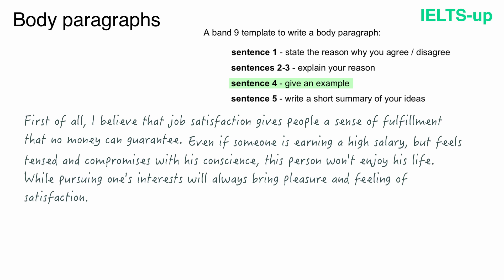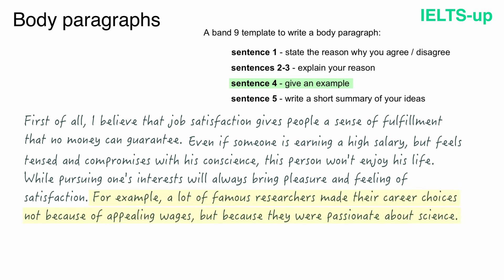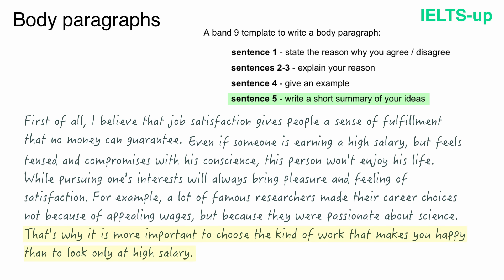So here is my sentence 4: 'For example, a lot of famous researchers made their career choices not because of appealing wages but because they were passionate about science.' And our last sentence in the body paragraph, sentence 5, should briefly summarize the ideas of the whole paragraph to strengthen your opinion. Here is my last sentence: 'That's why it is more important to choose the kind of work that makes you happy than to look only at high salary.'